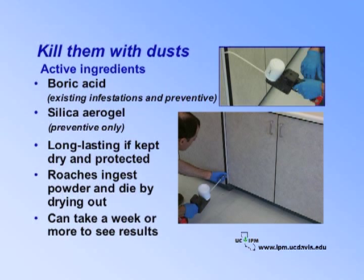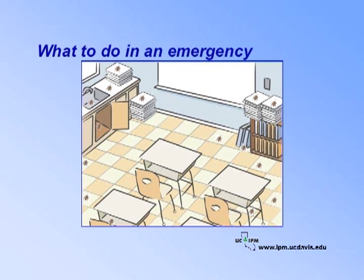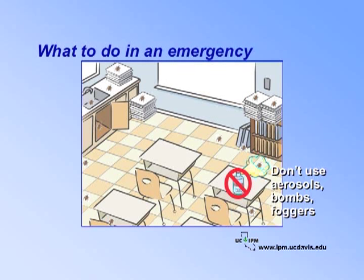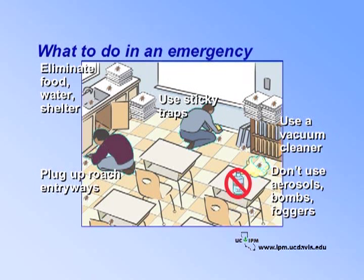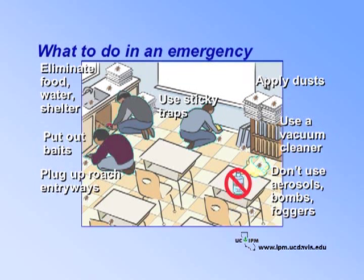Make sure the material stays dry and only apply it in areas where people will not contact it. Occasionally, an emergency situation may warrant the need for quick control to jumpstart your IPM program. Even if you are desperate, don't use aerosol sprays, bombs, or foggers — they often don't kill the roaches but just cause them to scatter to other places. Eliminate food, water, and shelter, and plug up roach entryways. Use a vacuum cleaner with a triple filter to remove food, debris, and cockroaches, shed skin, or eggs. Use sticky traps to figure out where the cockroaches are coming from. Start putting baits out and apply dusts as appropriate. Keep vacuuming up roaches, shed skins, and eggs until baits and dusts begin to work. Be sure to continue checking traps and improve cleanliness at the site.